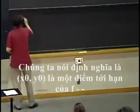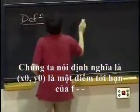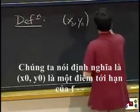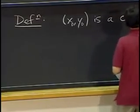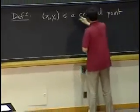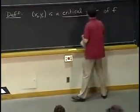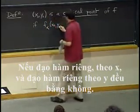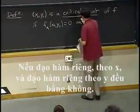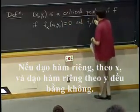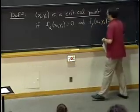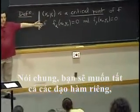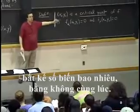We say, in the definition, we say that x0, y0 is a critical point of f if the partial derivative with respect to x and the partial derivative with respect to y are both zero. More generally, you would want all the partial derivatives, no matter how many variables you have, you want all the partials to be zero at the same time.